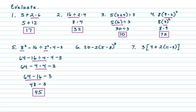Notice something important: if I did the 16 minus 3 first, I'd get 64 minus 13, which is 51 — a different answer. You've got to be really careful to work from left to right, especially with subtraction and division. It's not as critical with addition or multiplication, but with subtraction you have to be careful.